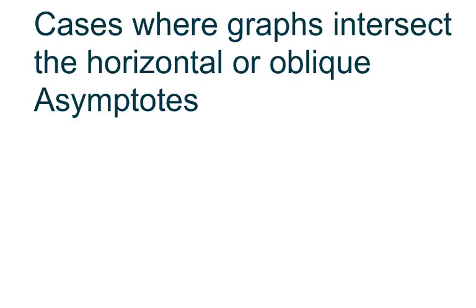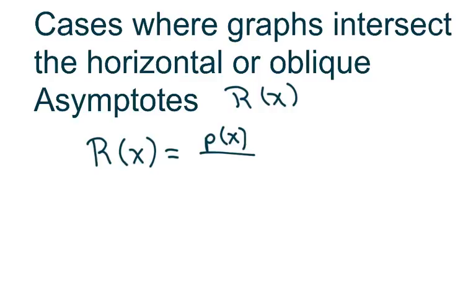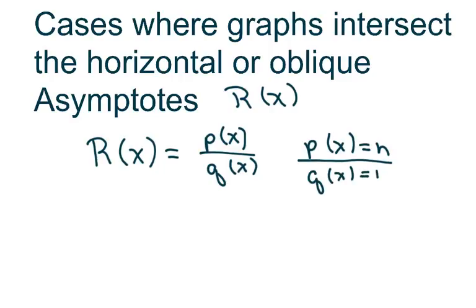Hi everyone. This is going to be 9 cases where graphs intersect the horizontal or oblique asymptotes of rational equations. We're using the terminology where this is your rational equation, and we're going to let the degree of p(x) equal n and the degree of q(x) equal m. The first thing we have to do is find the horizontal or oblique asymptote, then we set it to the original equation and see if the graph intersects.